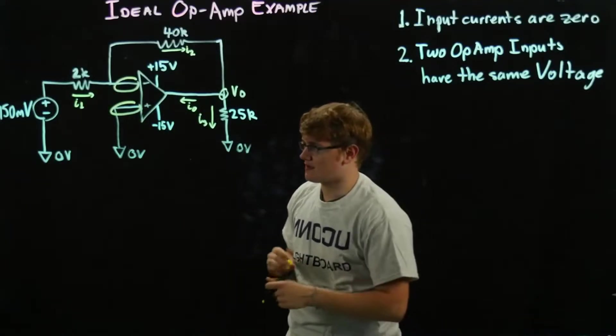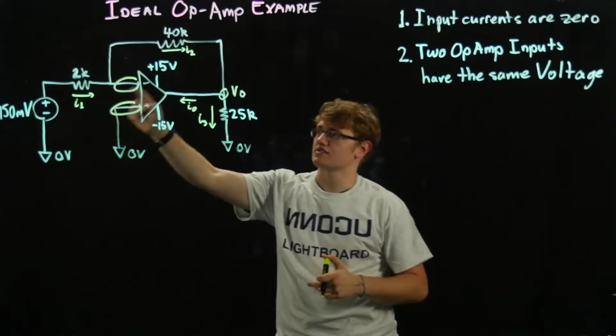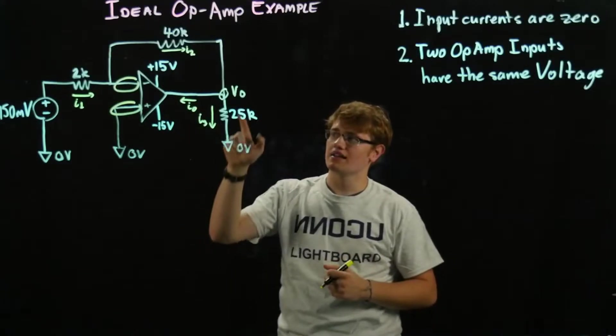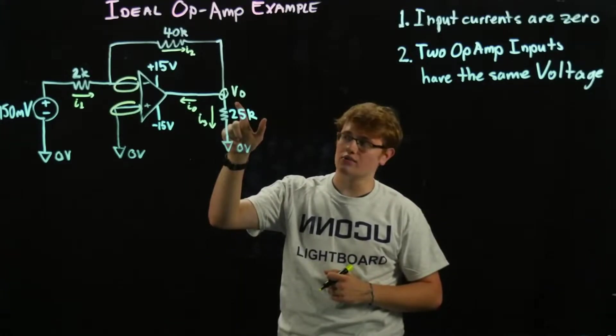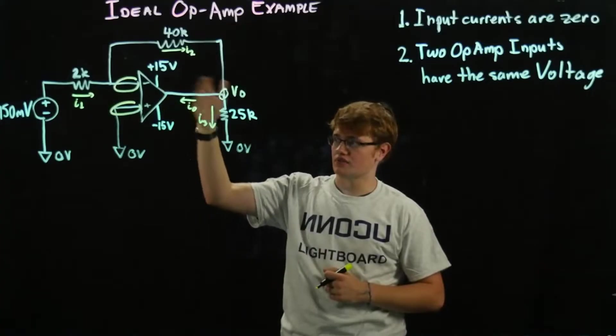So right off the bat we know that this voltage right here is going to be zero. Something to remember. We're going to try to figure out these currents right here, and then we're going to try to figure out this Vout, the voltage out from this circuit.